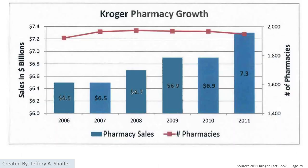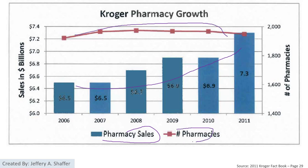The first example is Kroger Pharmacy Growth. We can see that they did increase the sales of the pharmacies. The bar chart indicates the pharmacy sales and the line chart indicates the number of the pharmacies. We can immediately tell there are some issues — they don't start from zero.